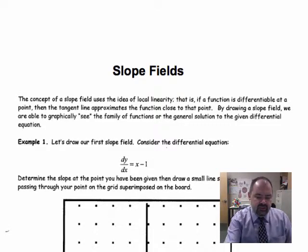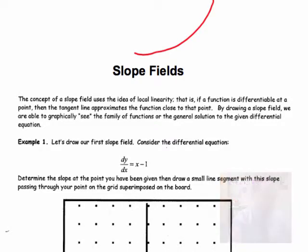Slope fields is based on the idea that if you have a differentiable function — a smooth curve — and you take a point and draw a tangent line, we know from our study that the tangent line approximates the curve at points around the point of tangency. The idea of a slope field is to take many tangent lines, shortened to just a little piece of each tangent line.